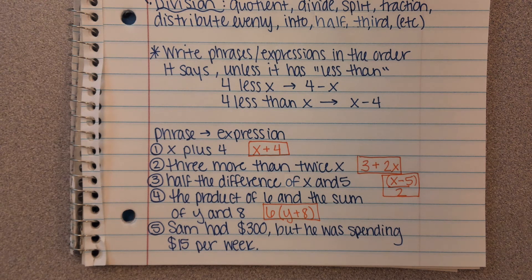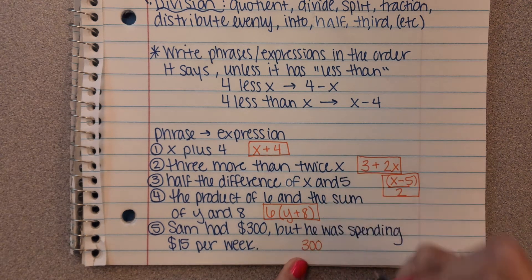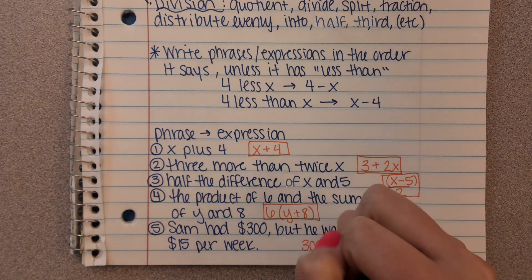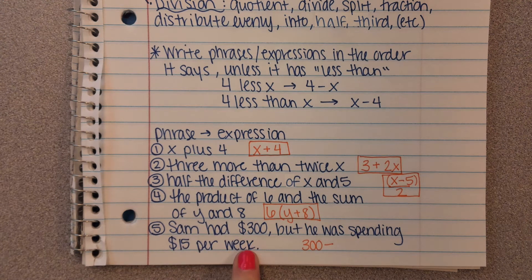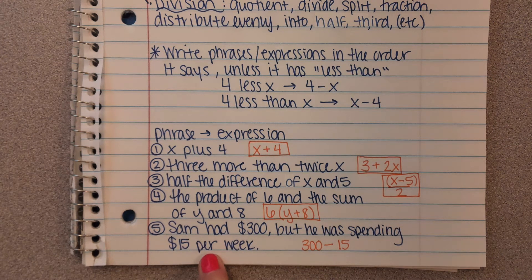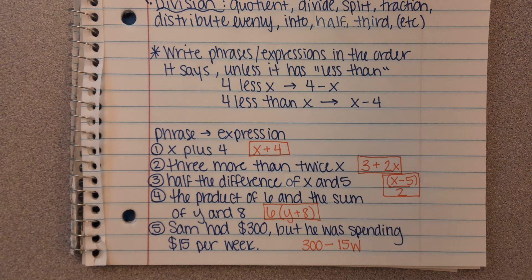Number 5 is more of a real-life application problem. 'Sam had $300 but was spending $15 per week.' Spending means we're taking money out — subtraction. He's losing $15 every single week, so we subtract $15 per week. 'Per' is under multiplication, so we multiply by a variable representing weeks — let's use W. The expression is 300 minus 15W.